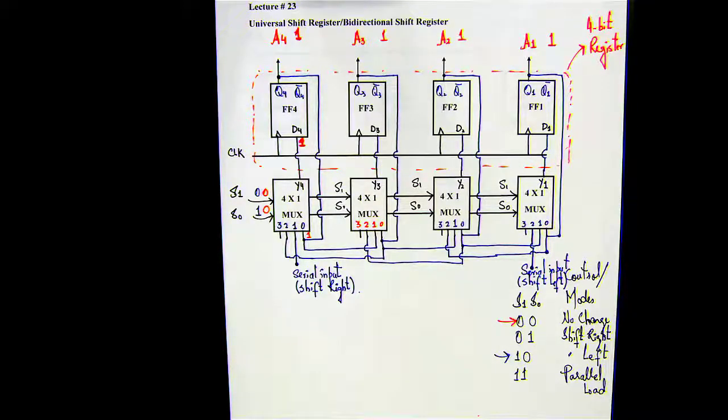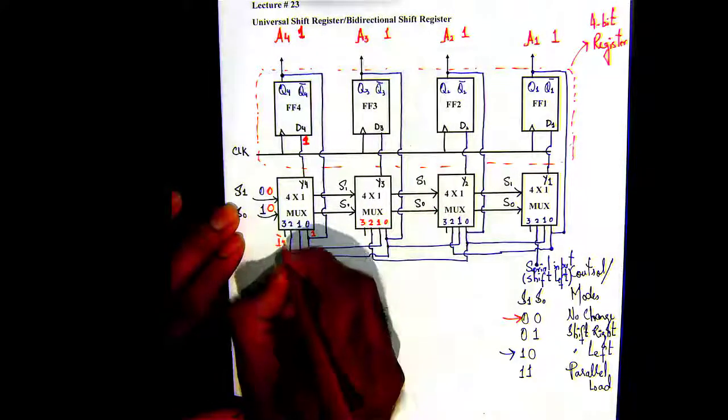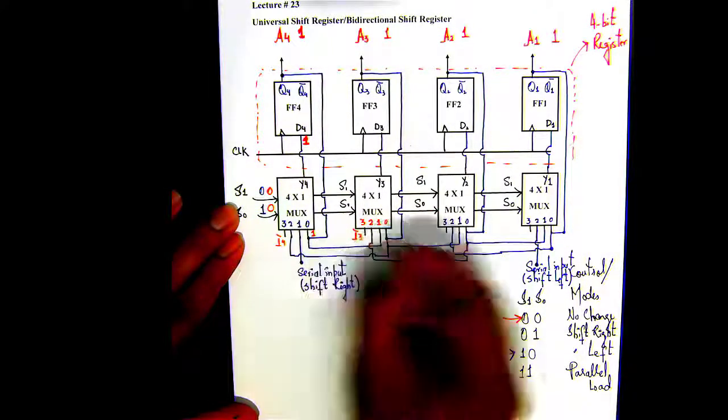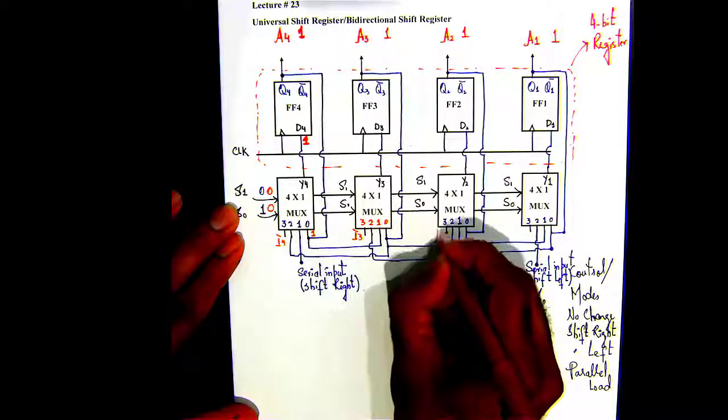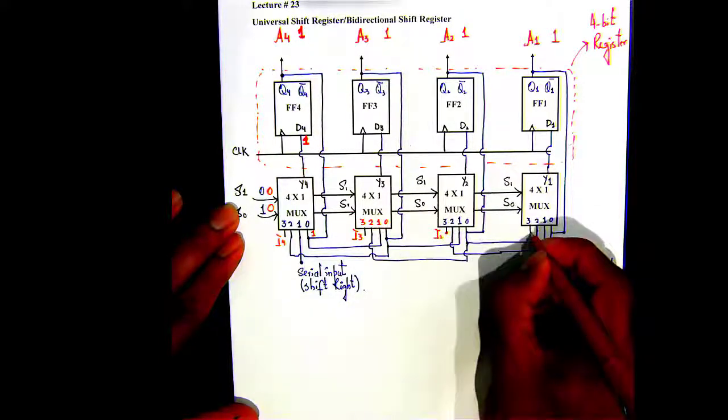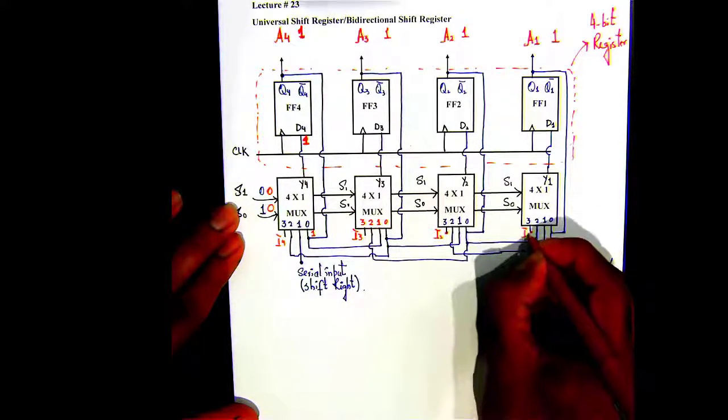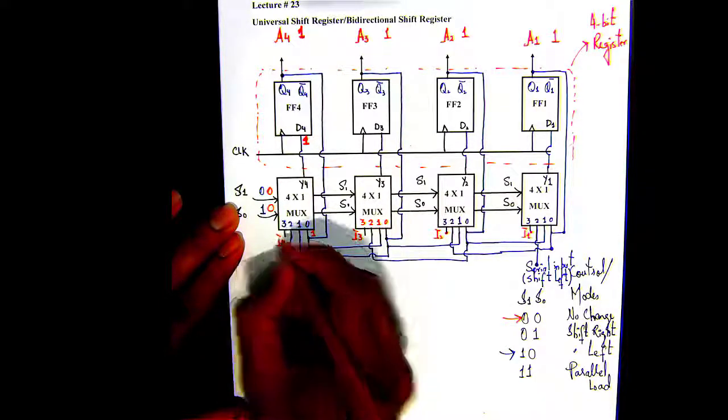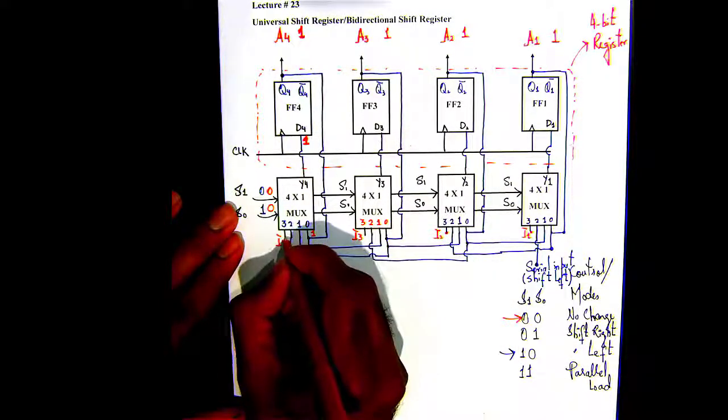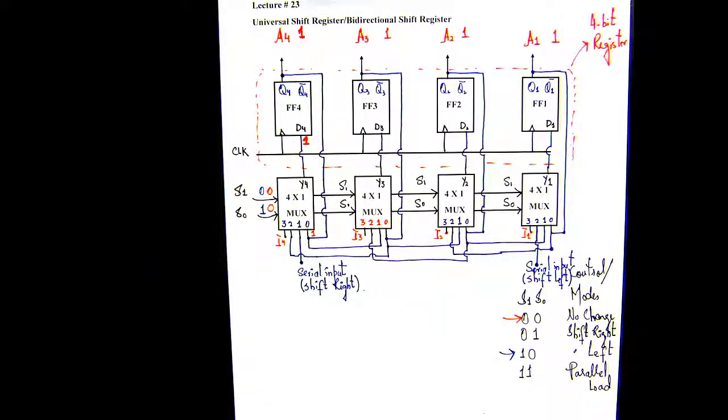Moving on to the last mode control, which is going to be the parallel load. Just parallel load, four input lines. So say this is your I4, this is your I3, this is your I2, and this is your I1. So you have four input lines connected to each of the muxes, and that would take whatever you have.